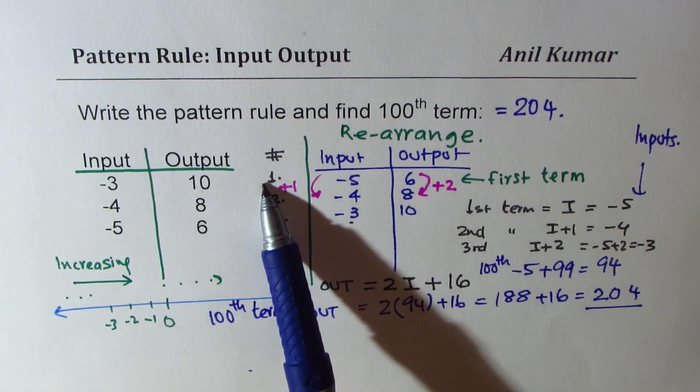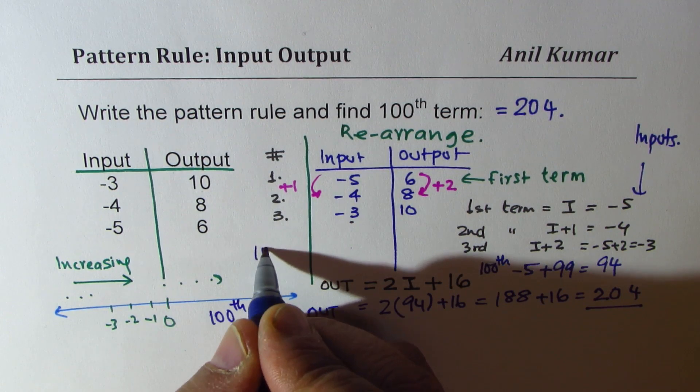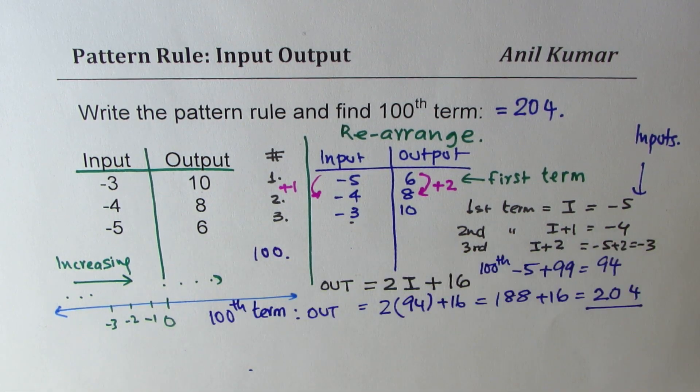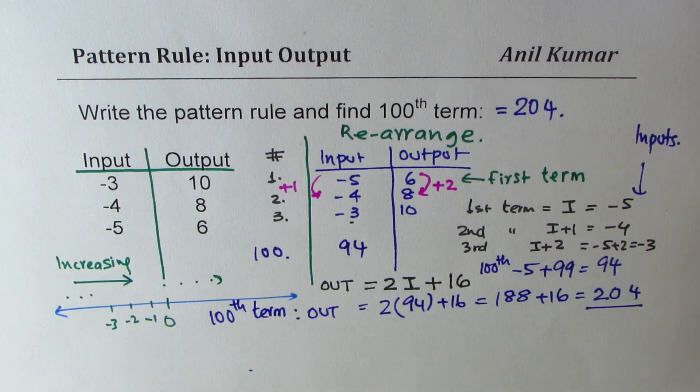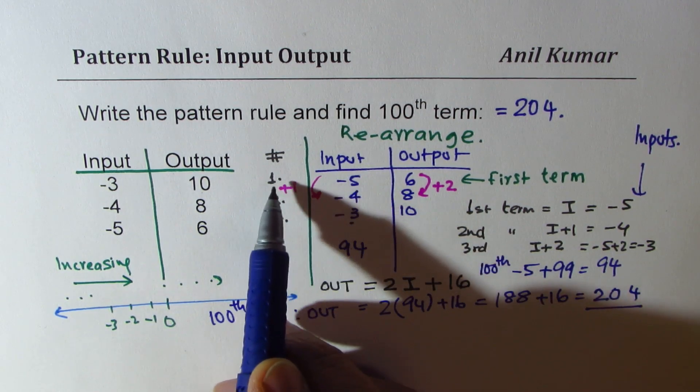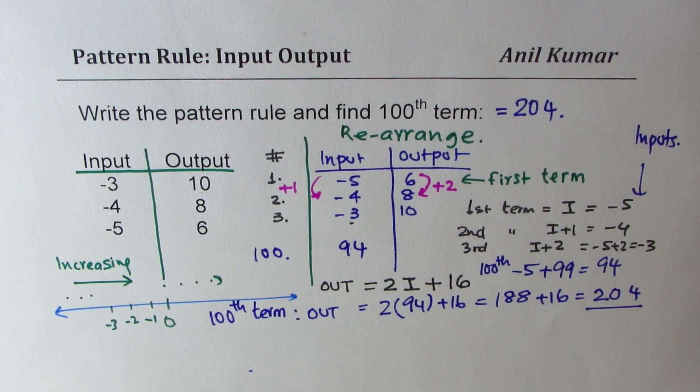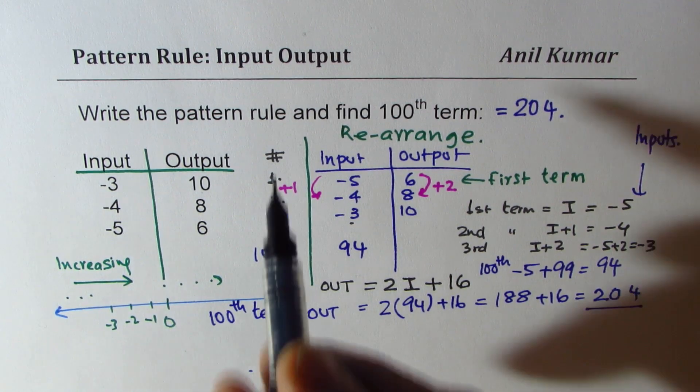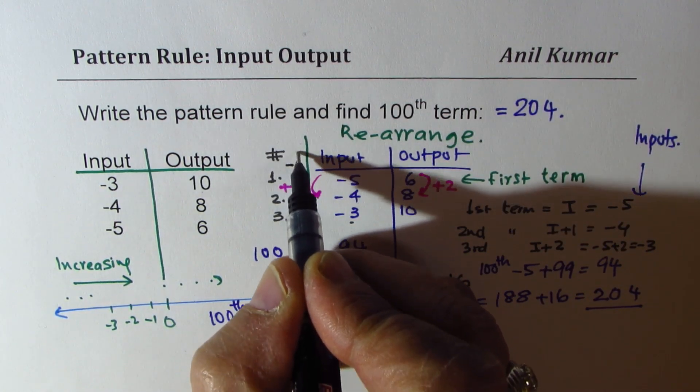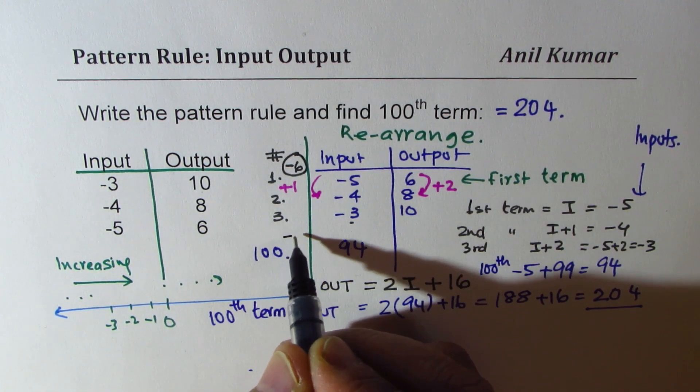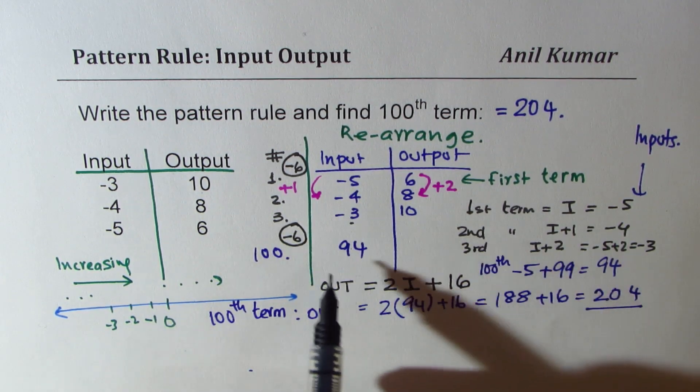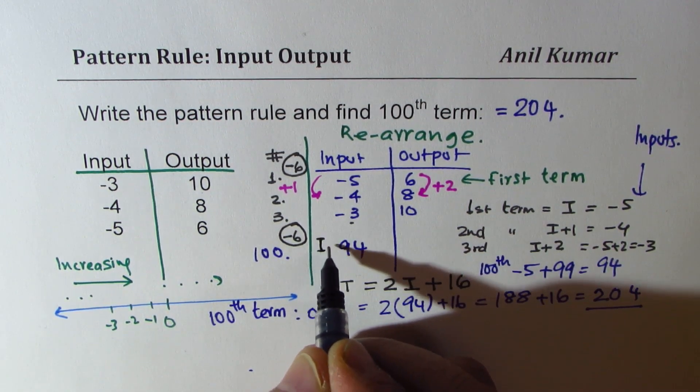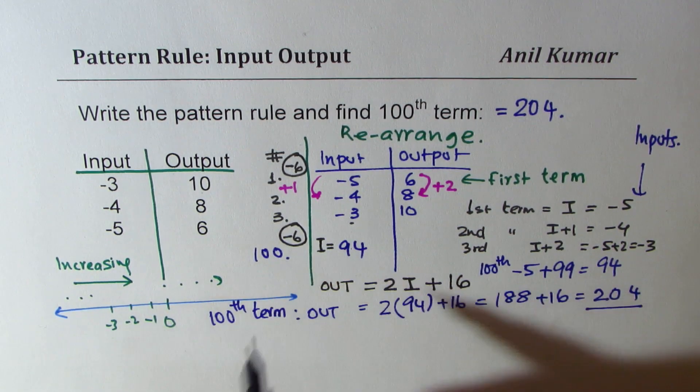Second, first term is minus five. So hundredth term will be what? Hundredth term is going to be 94. For first term getting minus five, we have to take away six. So what did we do here? In the first term, we took away six. So we'll take away six again to get the input for hundredth term. So input is 94. So that is the input 94 for hundredth term.